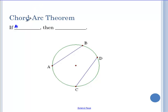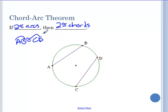If, let's make this more generic. If two congruent arcs, then two congruent chords. So in this case, if arc AB is congruent to arc CD, then chord AB is congruent to chord CD.